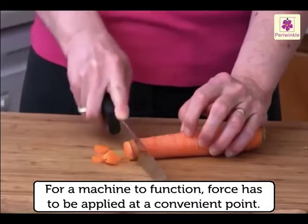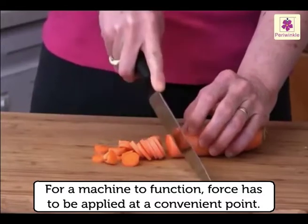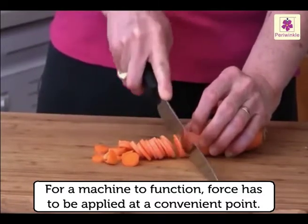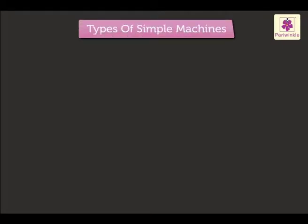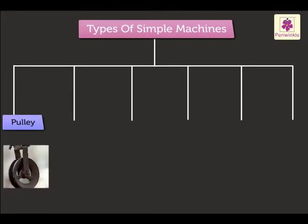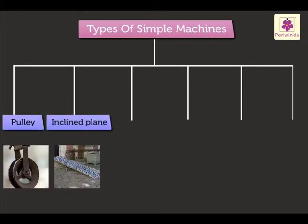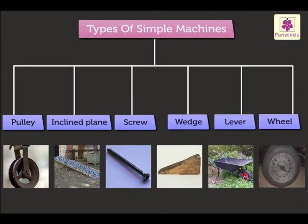For a machine to function, force has to be applied at a convenient point. There are six kinds of simple machines used by us in our daily lives: the pulley, the inclined plane, the screw, the wedge, the lever, and the wheel. Let's learn more about them.